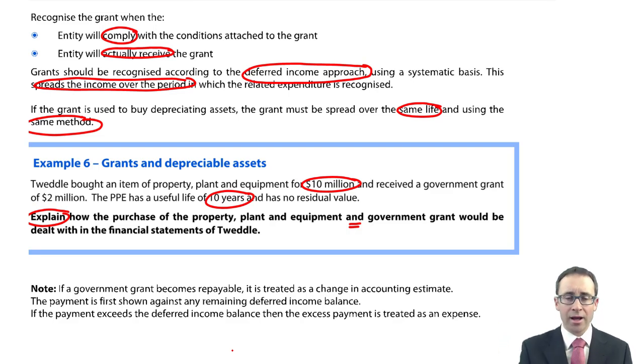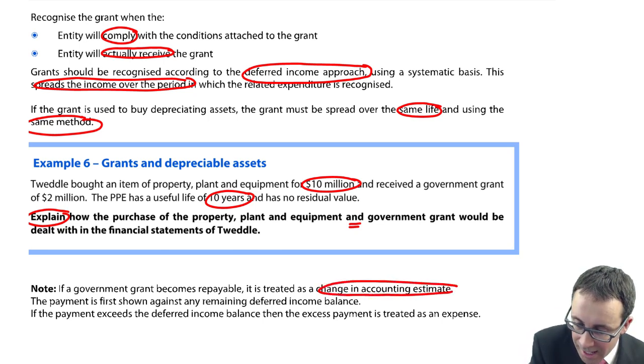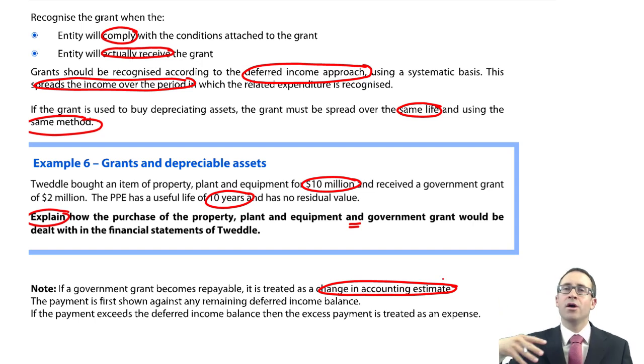Just a tiny little bit dangling down there at the bottom. Just a little note, just a little aside. If a government grant becomes repayable, so you've received the money, but then the government wants the money back for whatever particular reason that it may be. If that's the case, it is treated as a change in accounting estimates. So don't go back and restate everything and put in an opening figure adjustment as a restatement of a prior year.